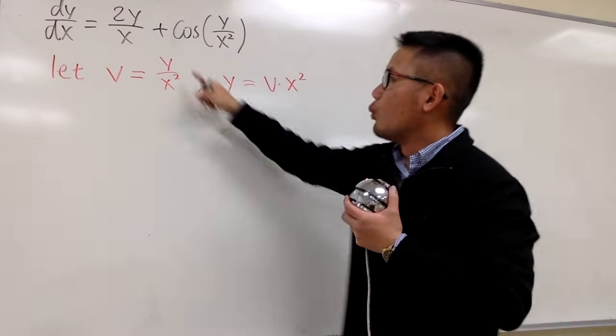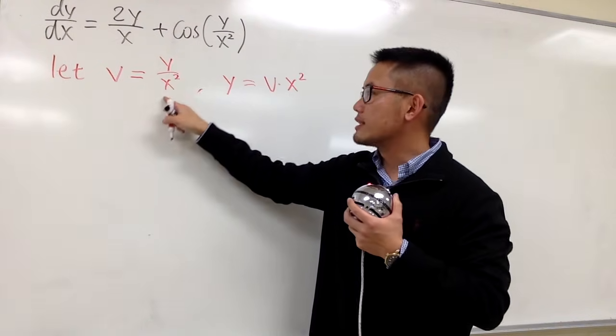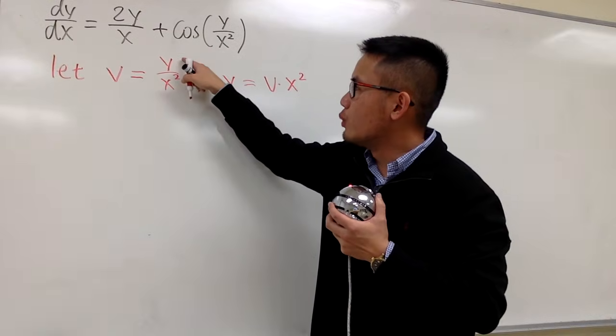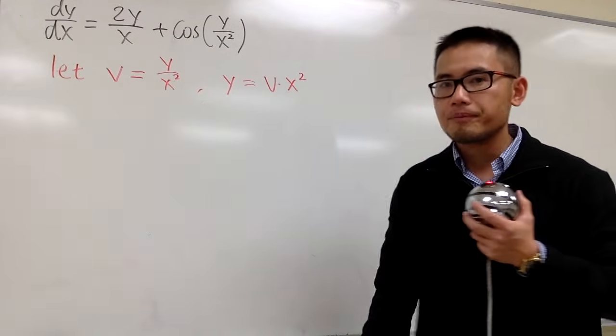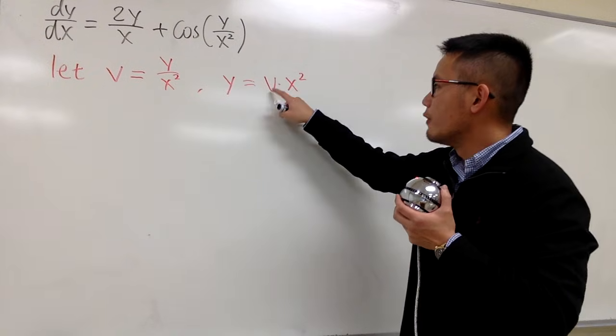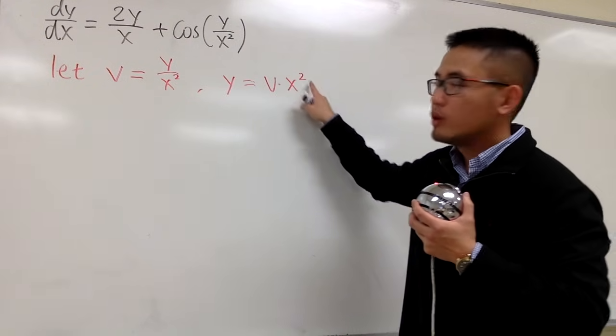And keep in mind, y is a function of x. x squared is, of course, a function of x. v is equal to y over x, so technically v is still a function of x as well. When you have y is equal to v times x squared, well, you have this right here.